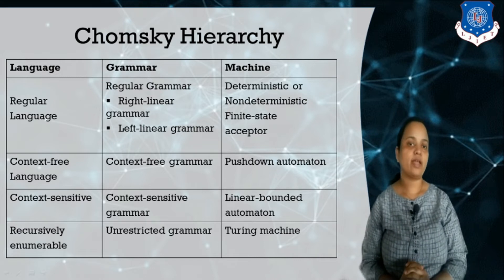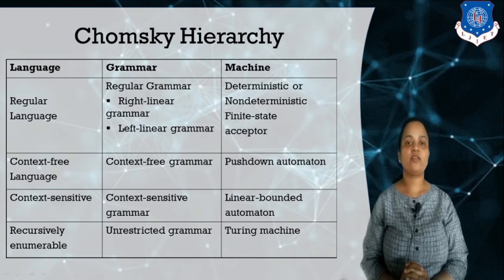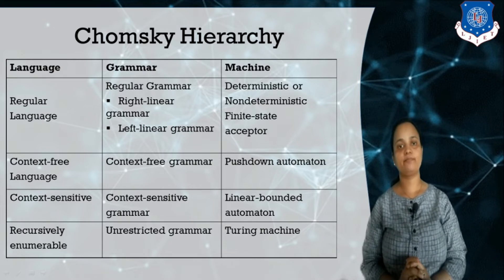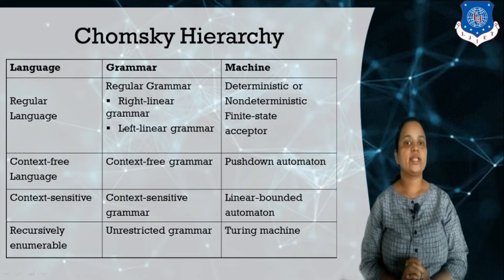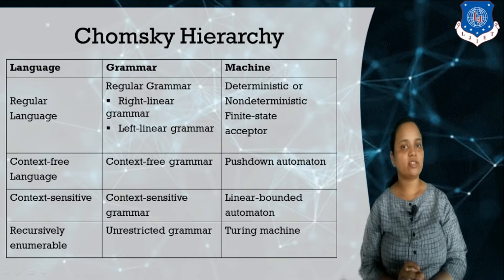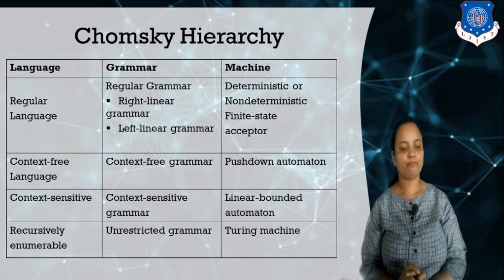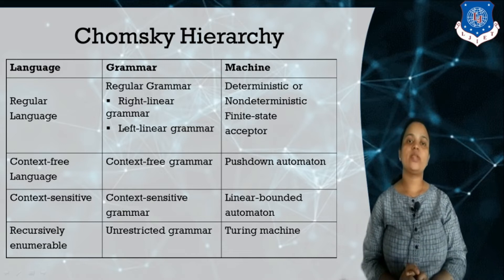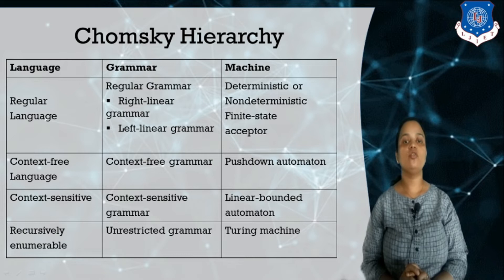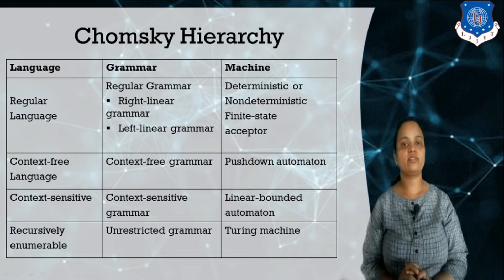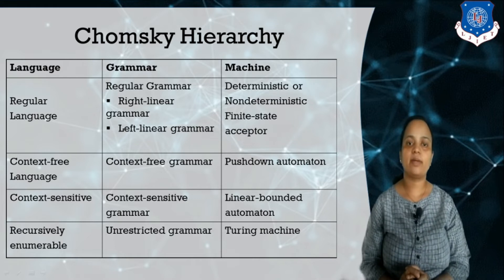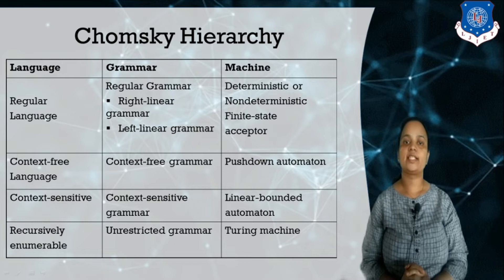Next is Type 1 grammar, which is known as context sensitive grammar. Context sensitive grammar generates context sensitive languages, and the acceptor of context sensitive language is linear bounded automata. The last one, Type 0 grammar, generates recursively enumerable languages and is defined by unrestricted grammar. The acceptor for this kind of language is a Turing machine.